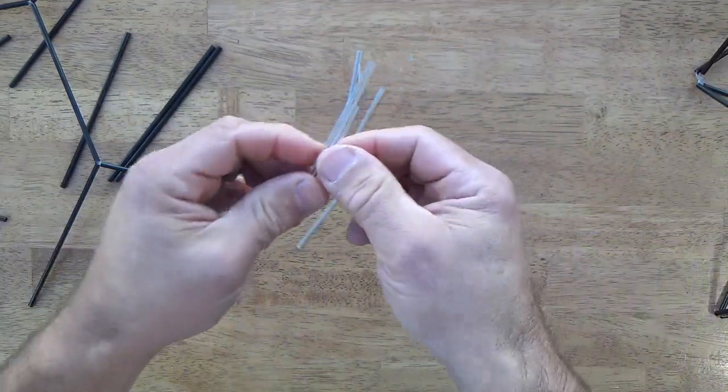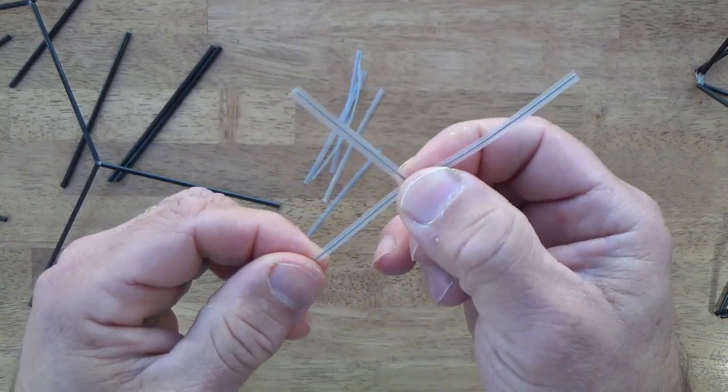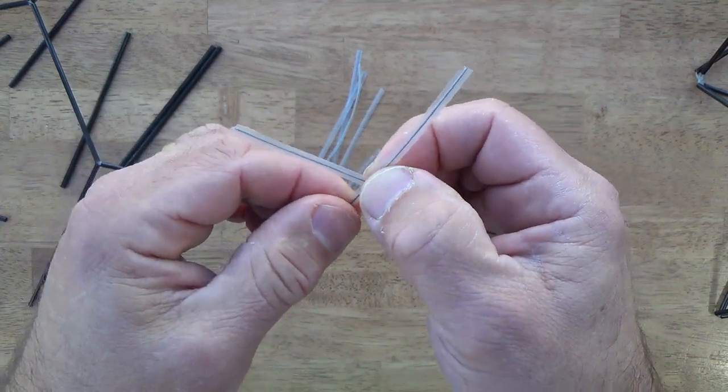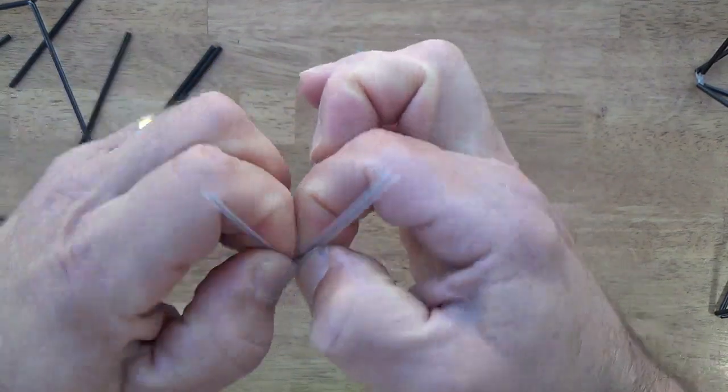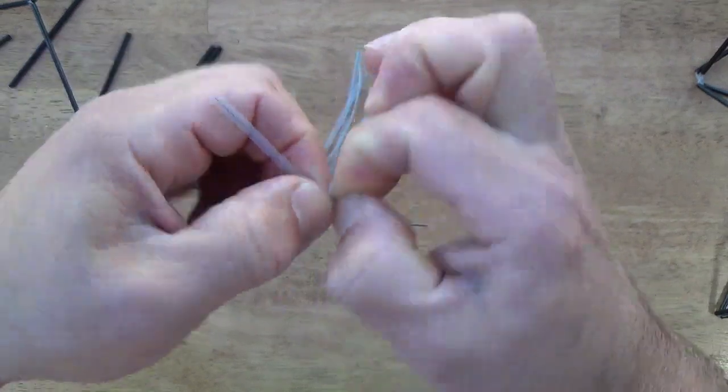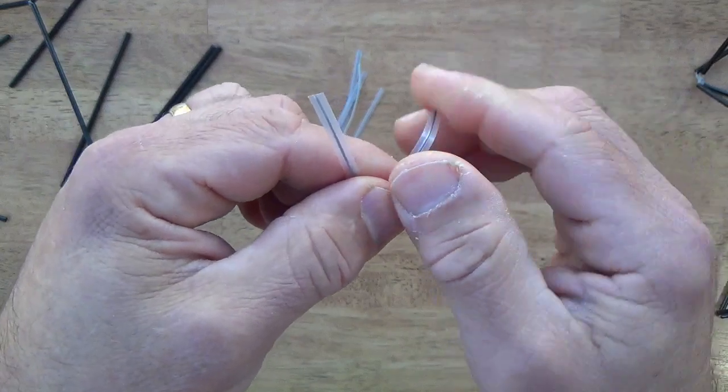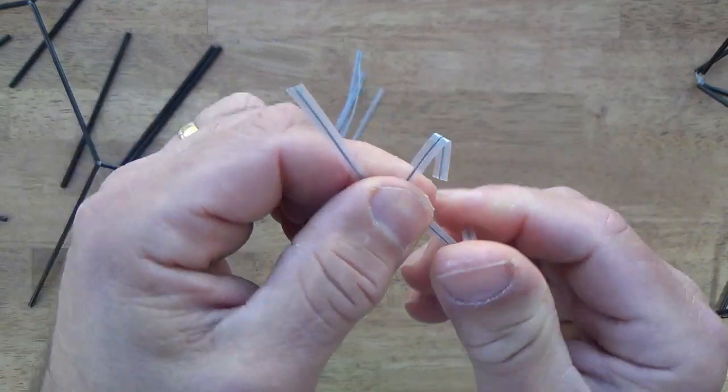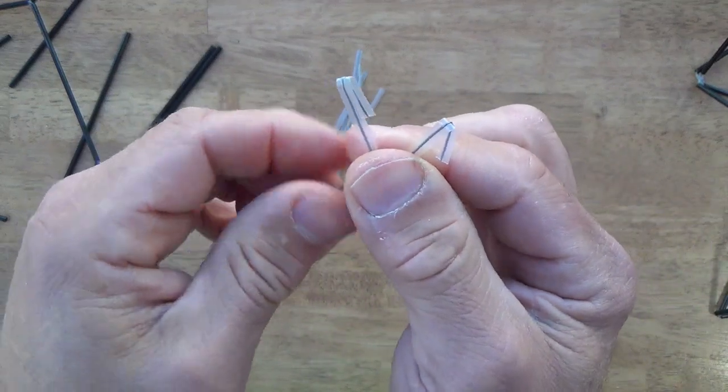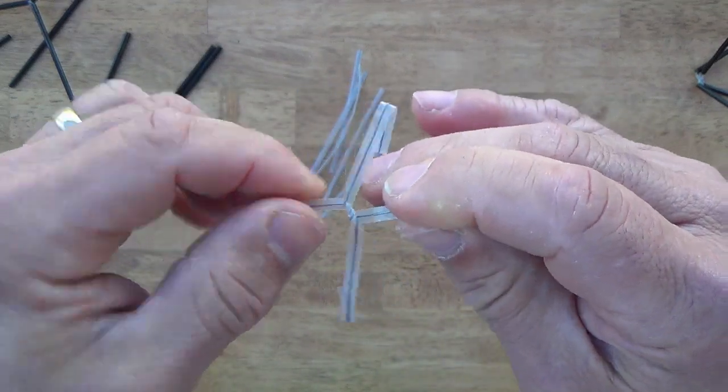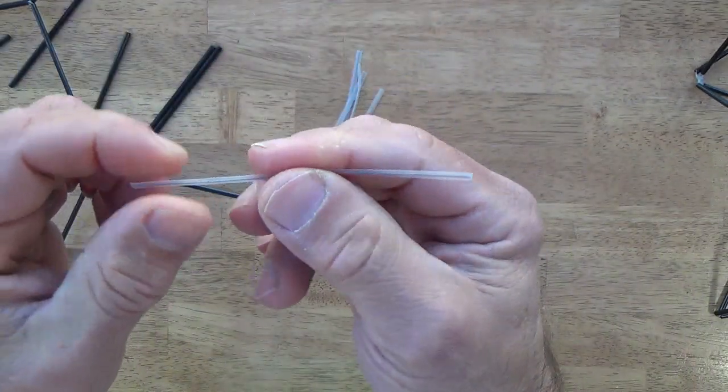To get a four-way juncture, probably the easiest way is to use two twist ties. Cross them and give a good tight twist or three. Now you have a big old X, and just double over these four protruding ends and you've got yourself a nice four-way juncture.